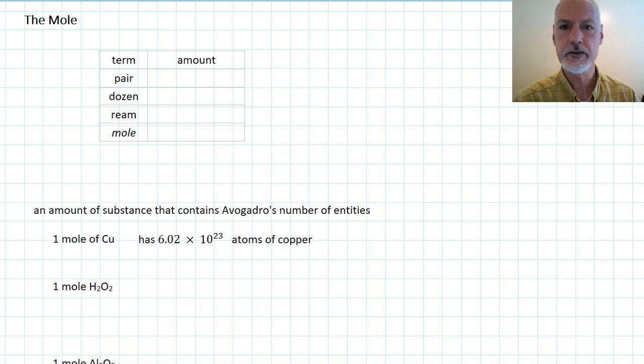In the English language, we often use certain terms to represent a number of items. For instance, when we see the word pair, what comes to mind is 2 of something. The word dozen refers to 12 of an item. A ream, as in a ream of paper, refers to the number 500, in this case 500 sheets of paper.